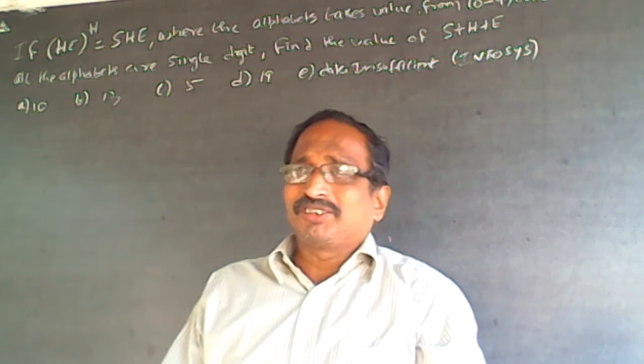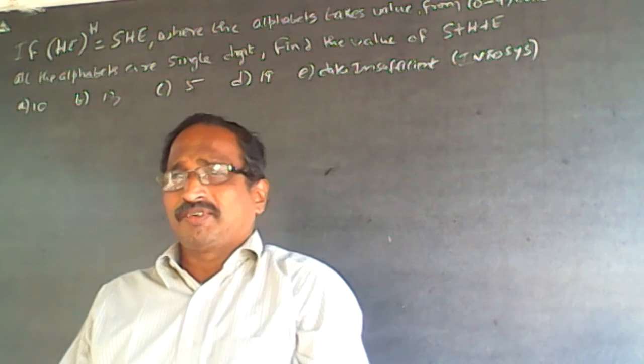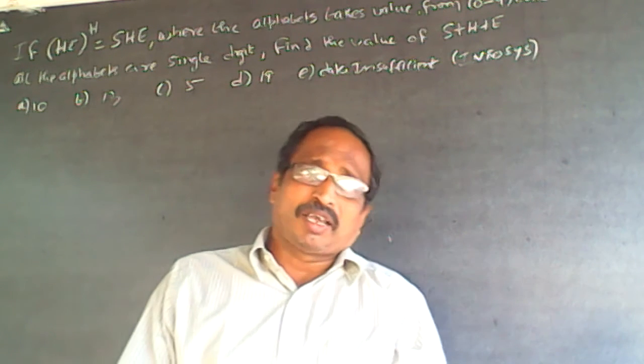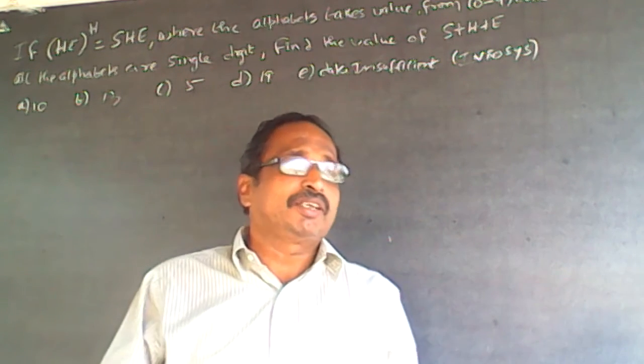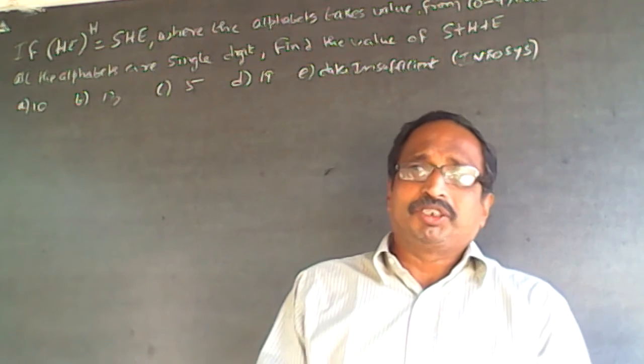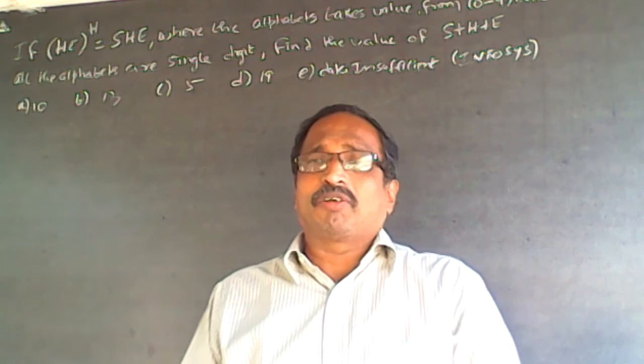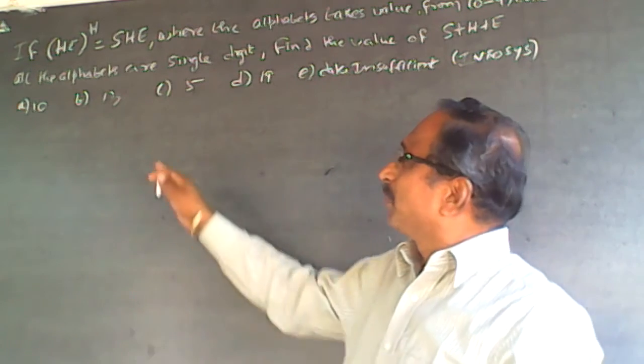This is a simple question on square of numbers, can be called as cryptology or cryptarithmetic or variable arithmetic because alphabets are there and you will have to find out the values.